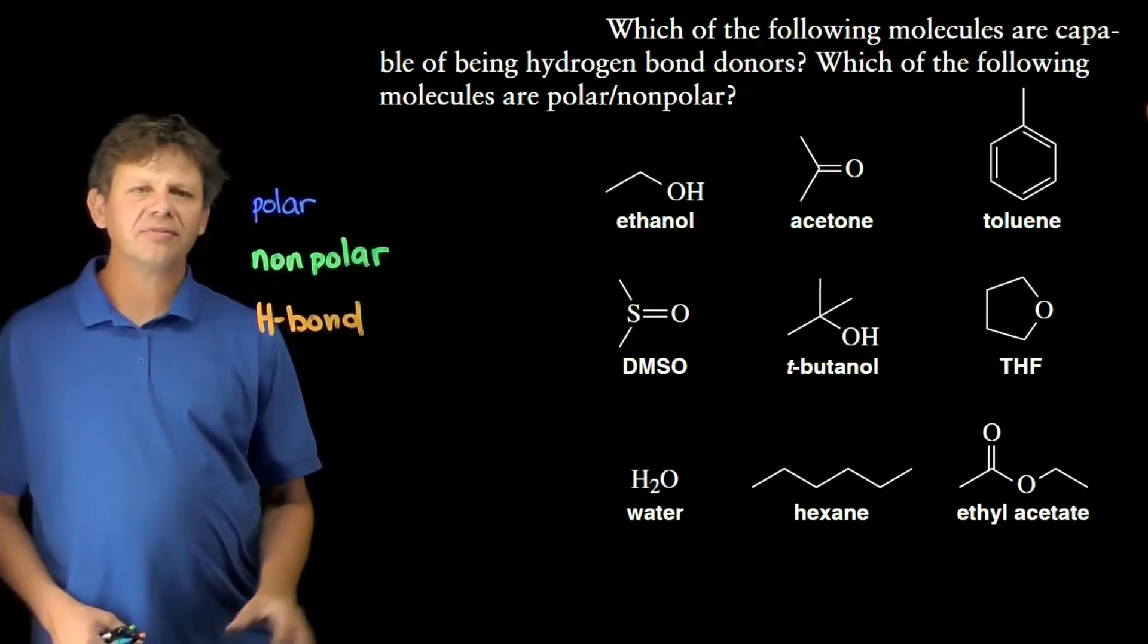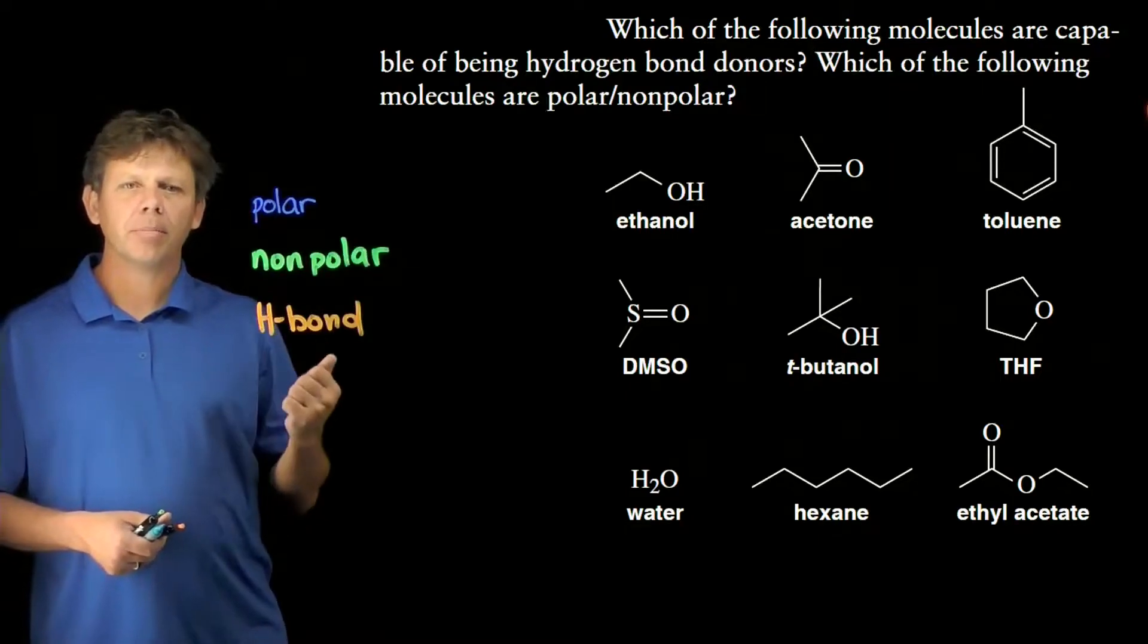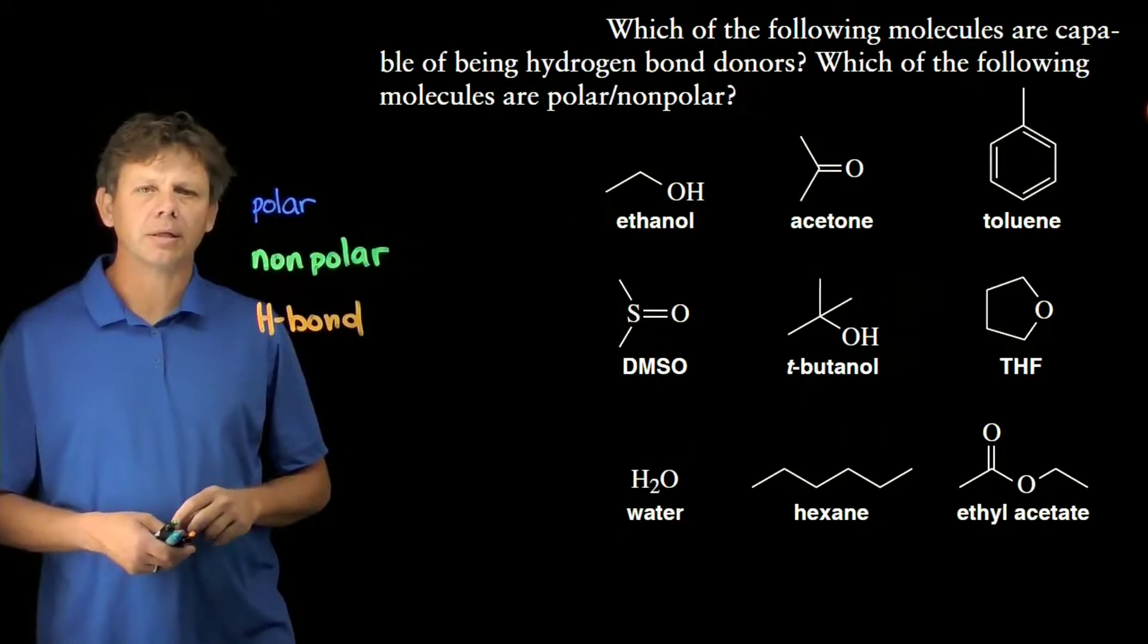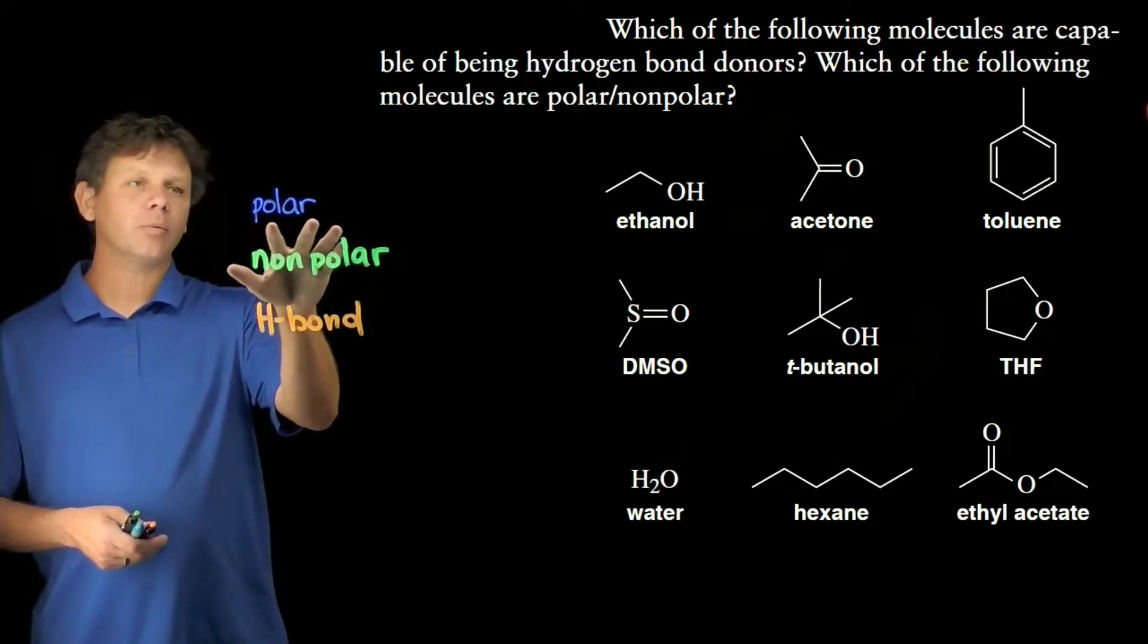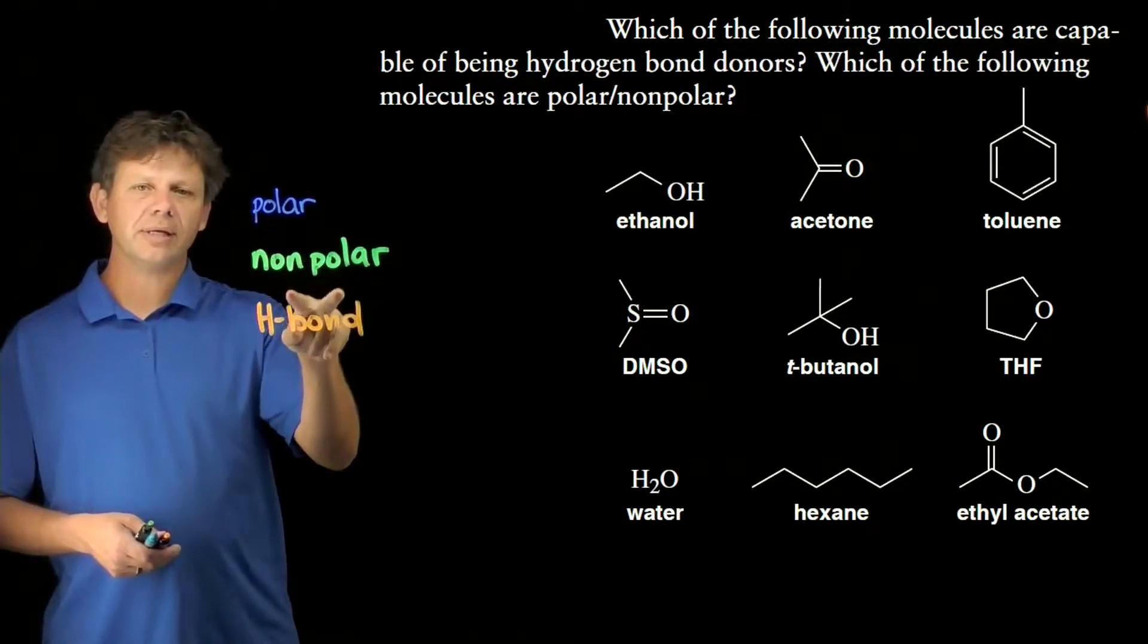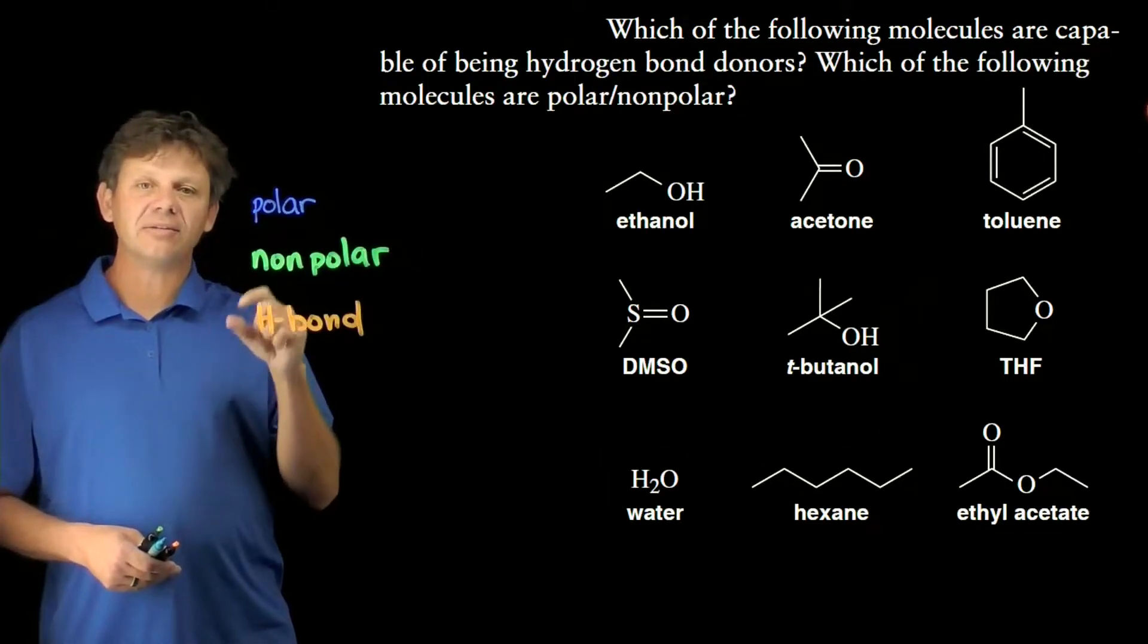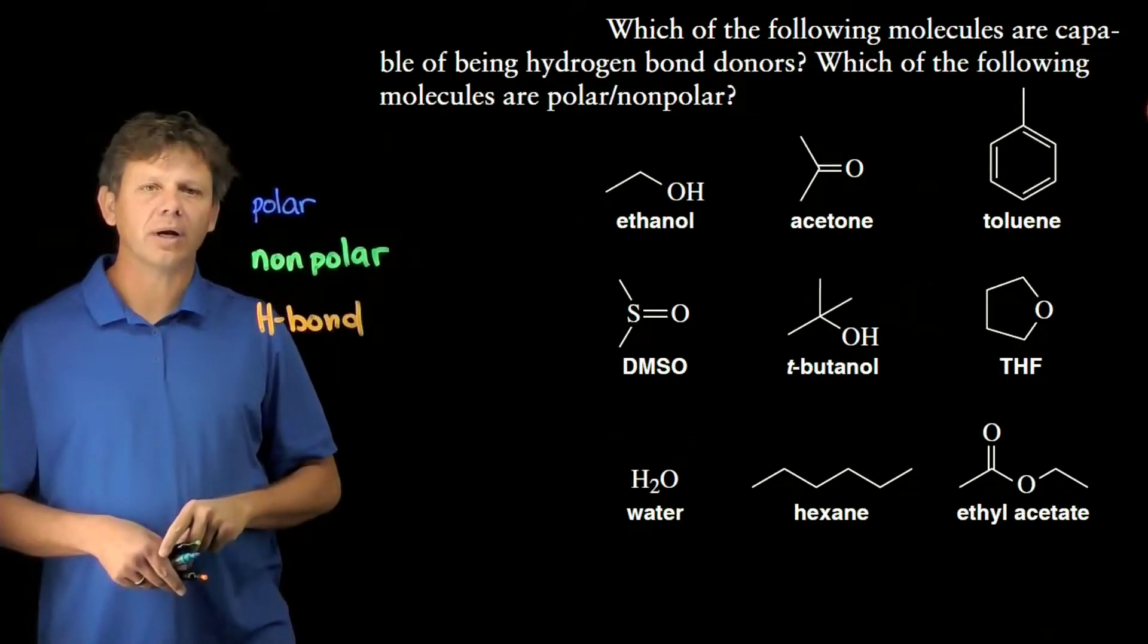In this assessment, we're going to classify a variety of solvents as being hydrogen bond donors, polar or nonpolar molecules. Our color code is that we're going to circle the polar ones in blue, the nonpolar ones in green, and the hydrogen bond donors in orange. We may see some molecules circled twice.